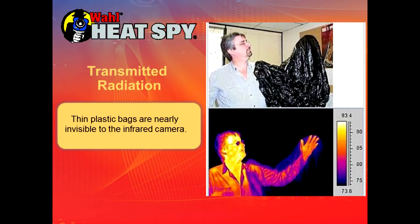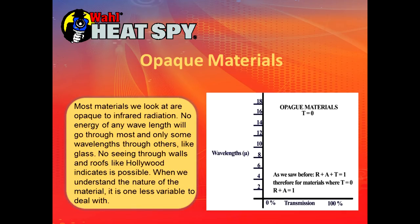This shows a garbage bag over a hand — you can see that it's pretty much invisible to the camera. Most materials we look at are opaque to infrared radiation — no seeing through walls or roofs like Hollywood indicates.